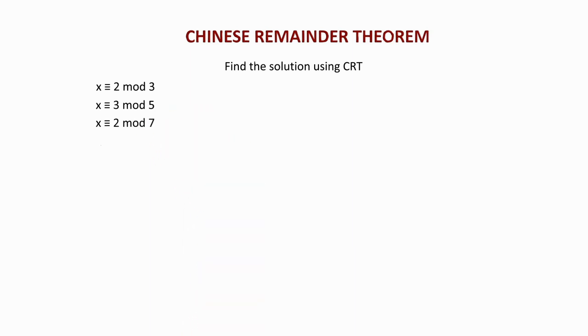Now, we may convert these into equations. How do you do that? x is congruent to 2 mod 3 can be written as x mod 3 equals 2.